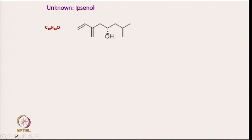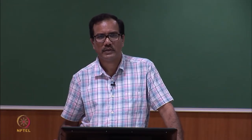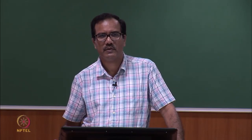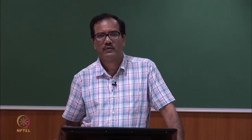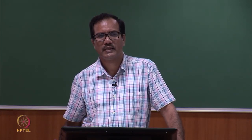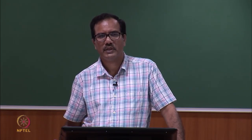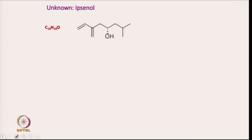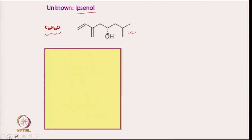Now I will give you one structure and discuss how to get all the resonance assignments from the NMR spectrum. This compound has the molecular formula C10H18O and the structure is Ipsenol. Let us see how we can assign it.